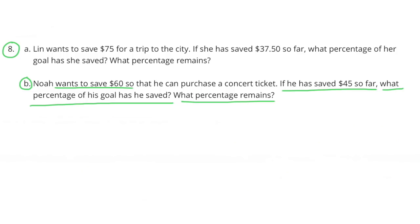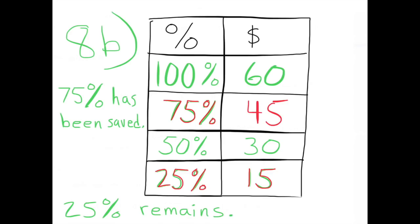Problem 8b: Noah wants to save $60 so that he can purchase a concert ticket. If he has saved $45 so far, what percentage of his goal has he saved? What percentage remains? 100% of his goal is $60. So far he has saved $45. This chart shows that $45 is 75% of his goal. He has saved 75% of his goal and 25% remains.